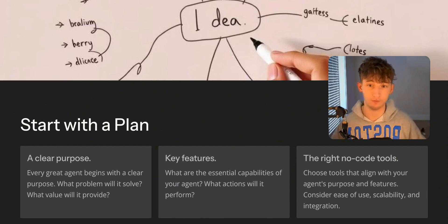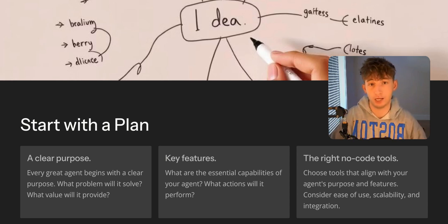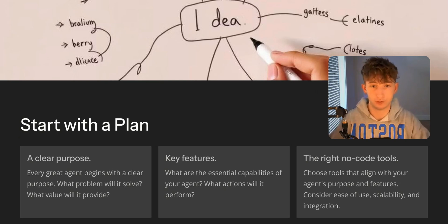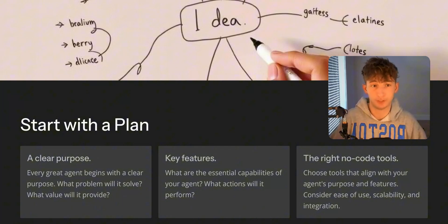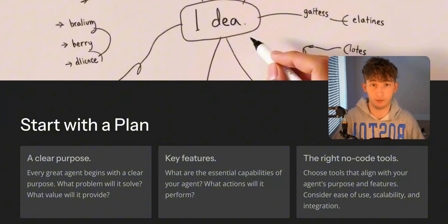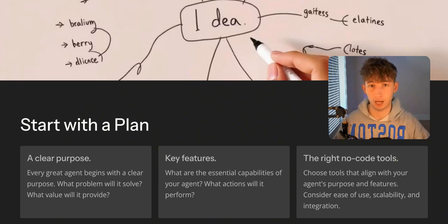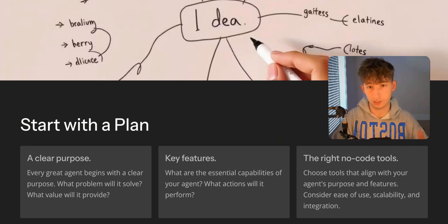Next, identify the key features. Once you have your purpose, break it down into features. Think of the agent as a collection of abilities working together. For instance, if your goal is to automate customer support, your features might include responding to FAQs, connecting to a database of customer information, and escalating complex queries to a human. If it's a data analysis agent, features could include importing data sets, running analytics, and generating visualizations. I'd highly recommend starting small — focus on one or two essential features for your first version. You can always expand later.